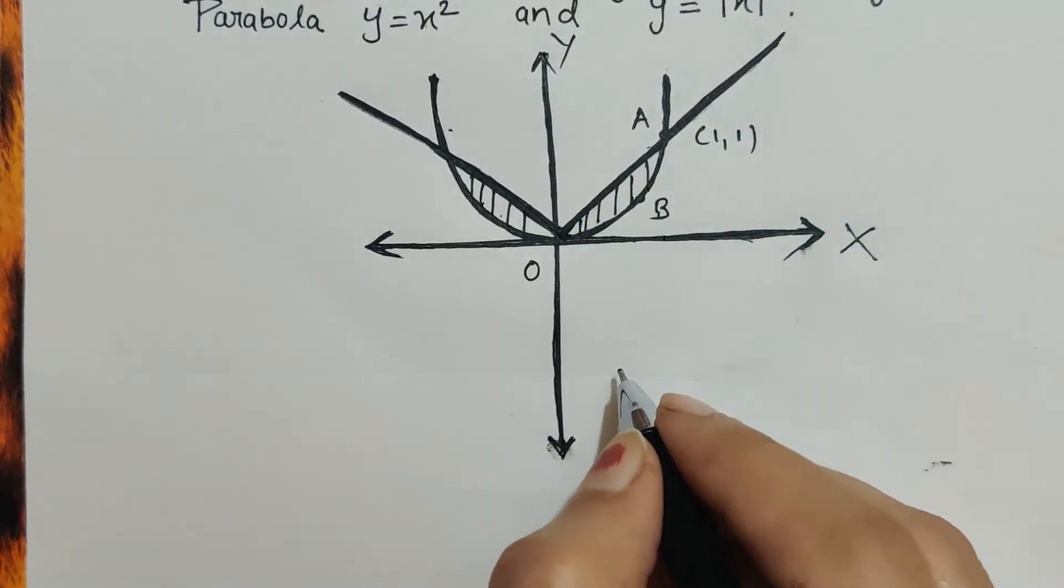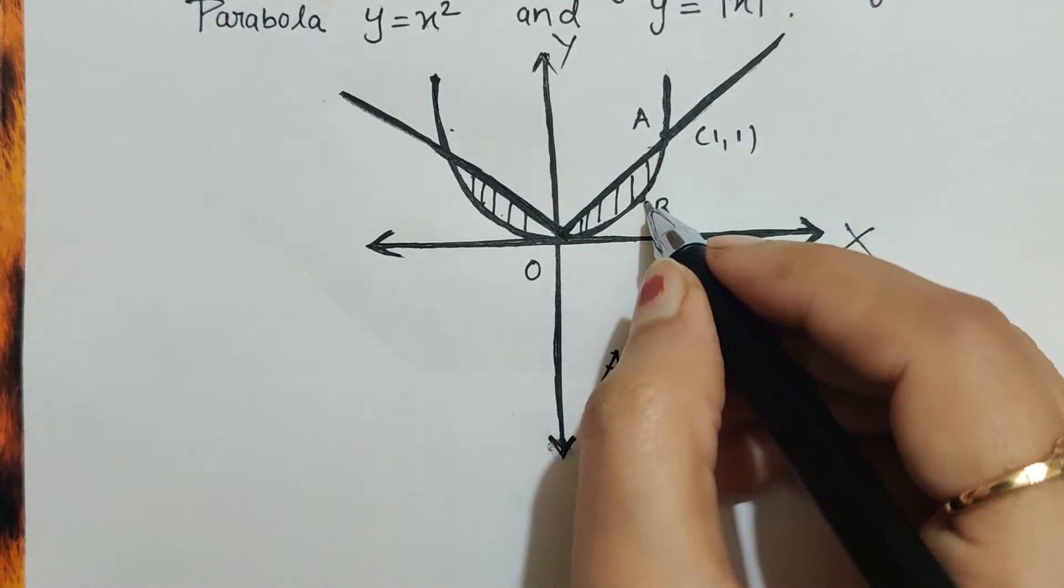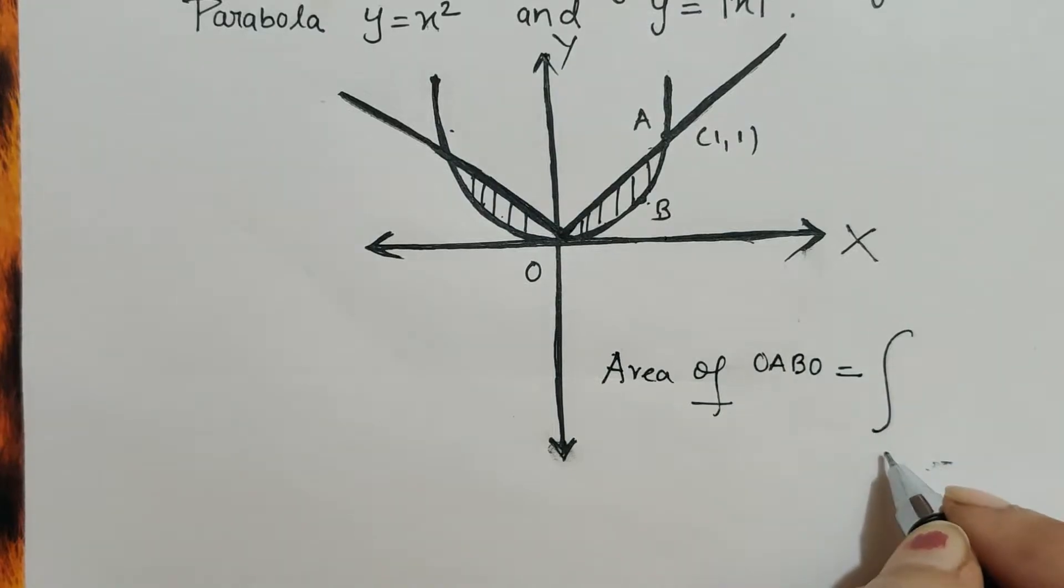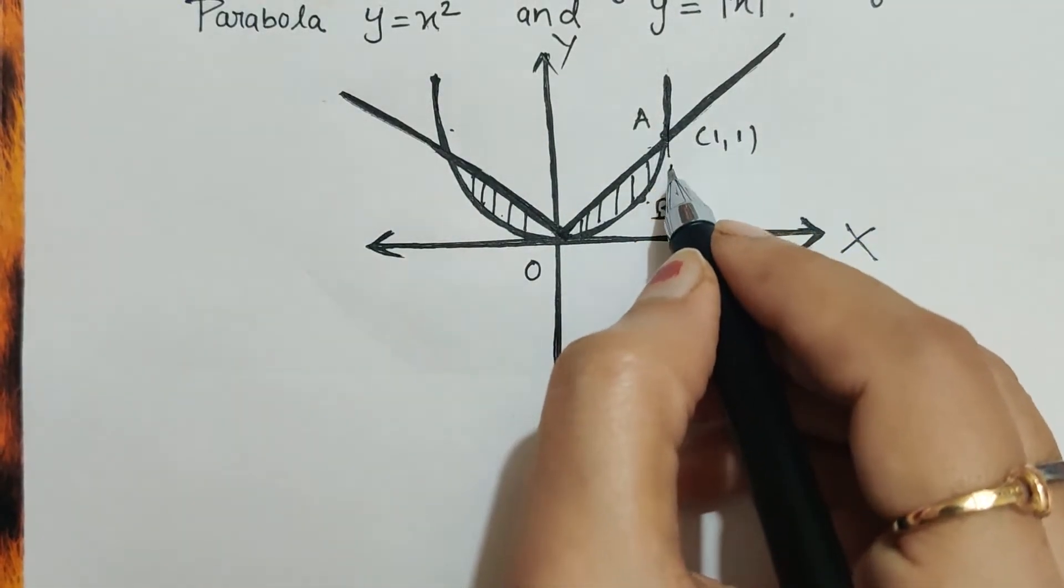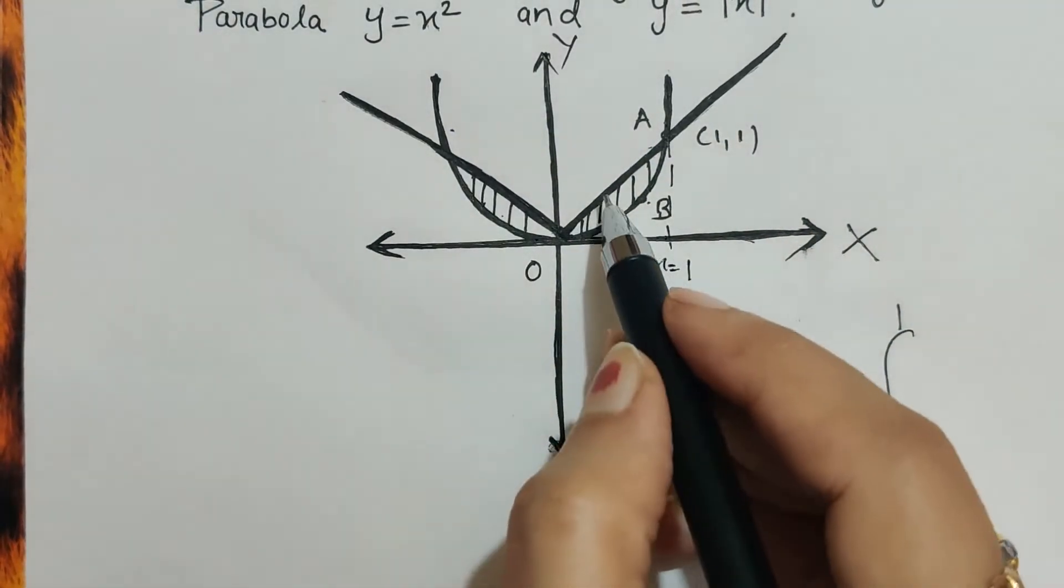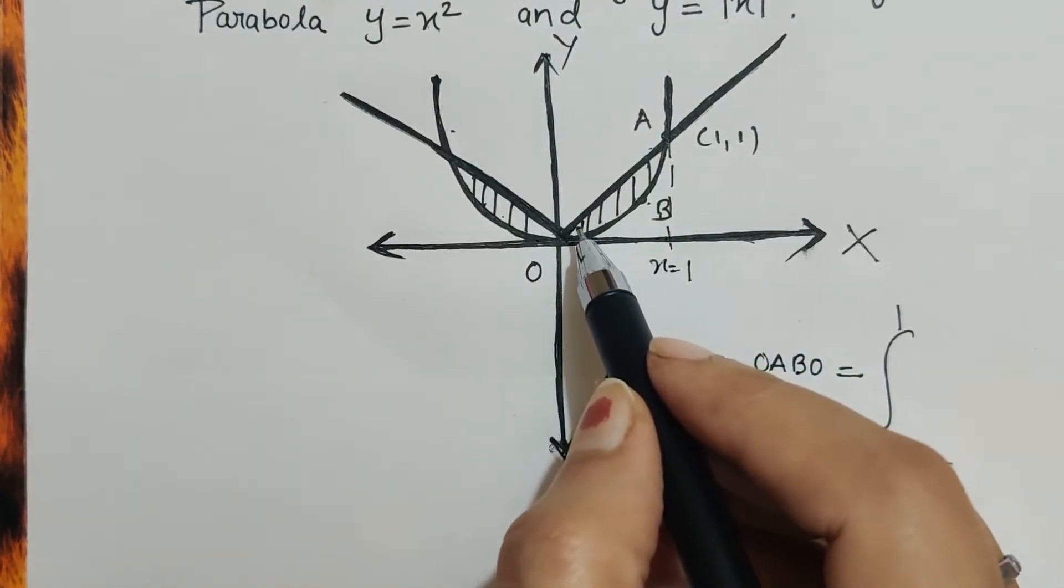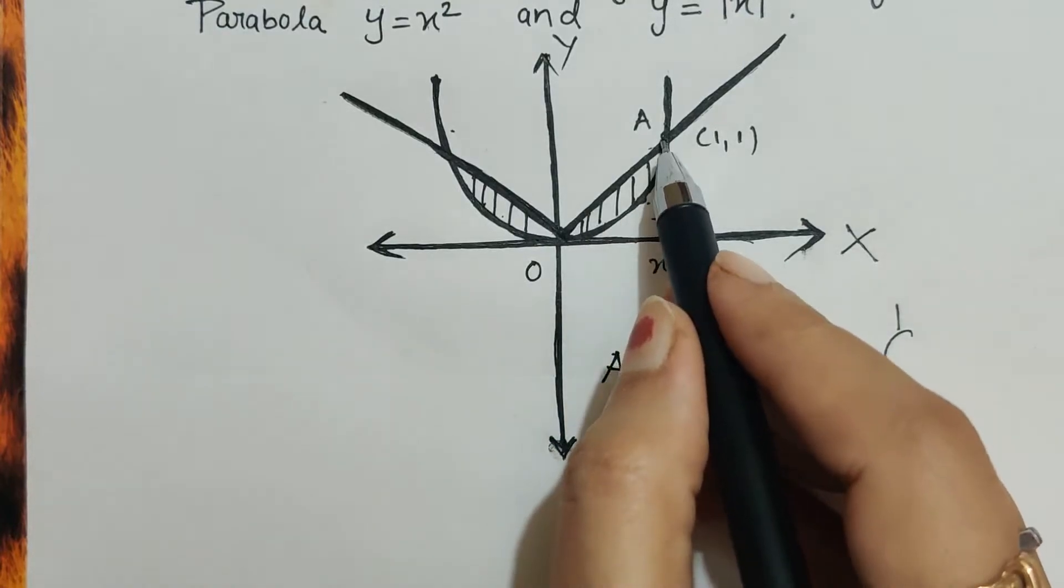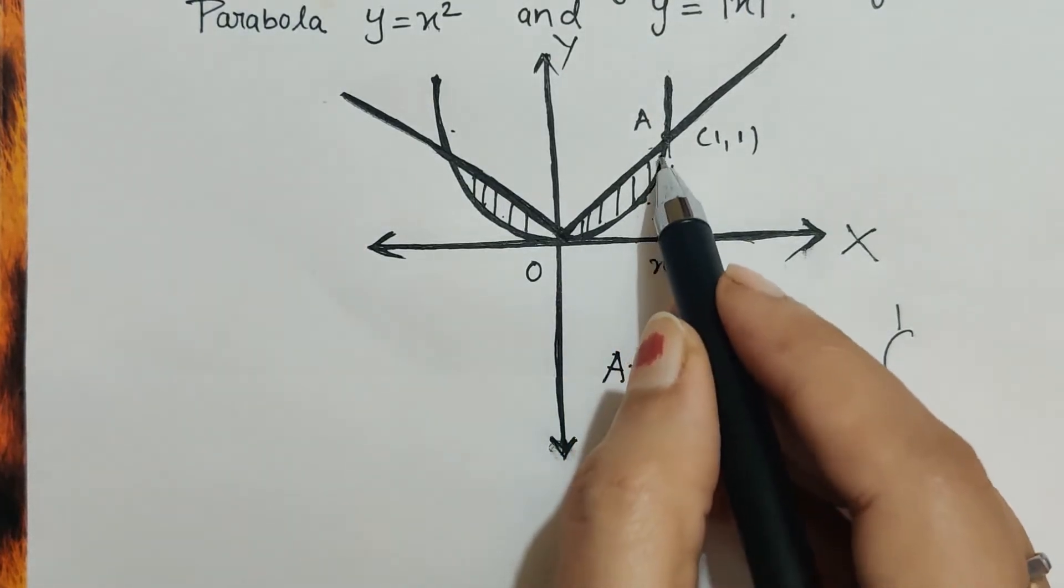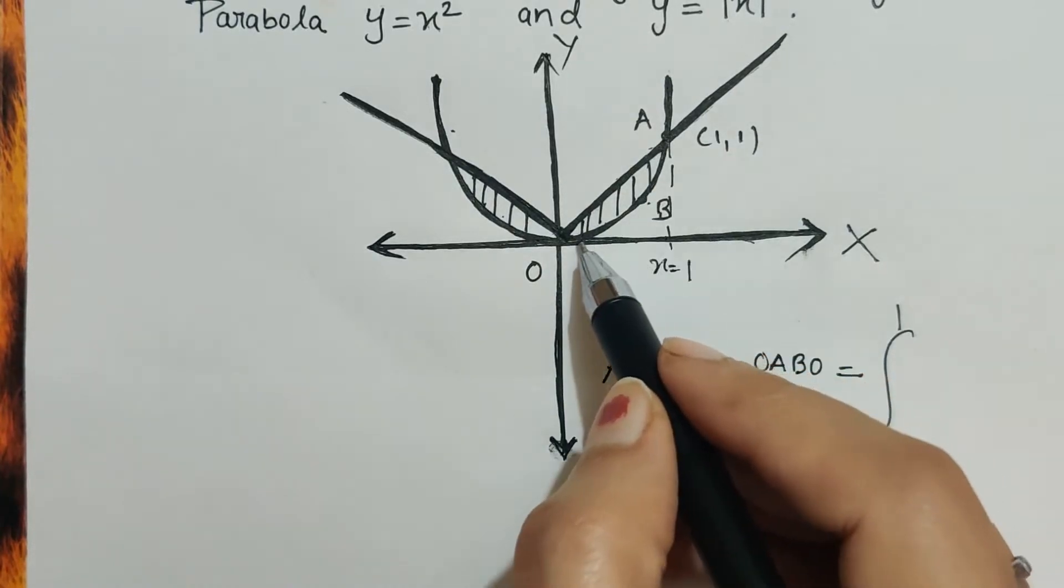So what we will write is area of OABO is equal to integral from 0 to 1, because the limit we have to take is from 0 to 1. The x coordinate here is 1, and as I have already said in my previous video, that finding area is nothing but area of the upper curve minus area of the lower curve. So here this line is up above the parabola.